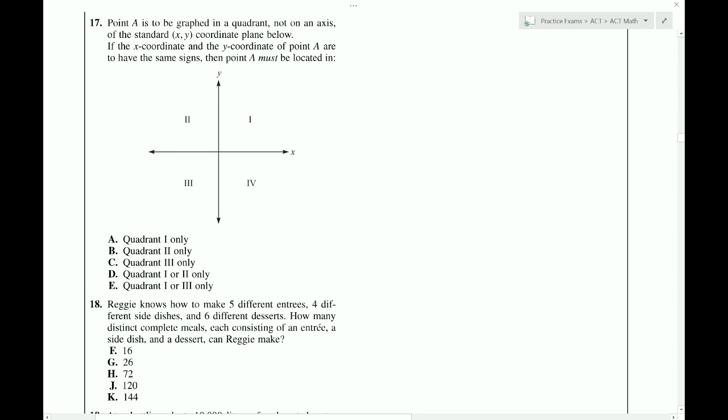Point A is to be graphed in a quadrant, not on an axis. If the x and y coordinate of point A are to have the same signs, meaning either they're going to be both positive or both negative, then point A must be located where? Well, not so bad. So, it could be located, for example, here, in which case the x and y will be both positive. And it can also be located somewhere here, where they're both negative. To the left and down. So, it's either quadrant 1 or 3. Choice E.